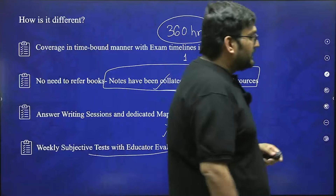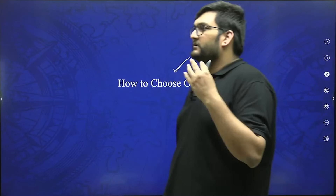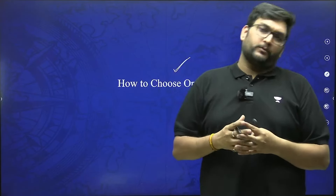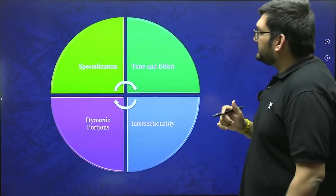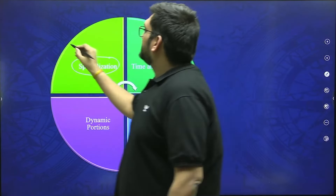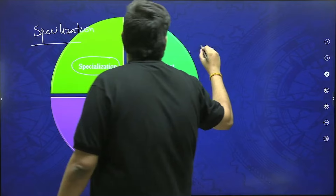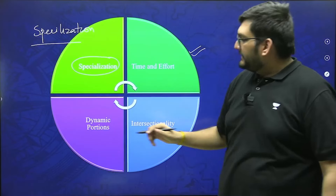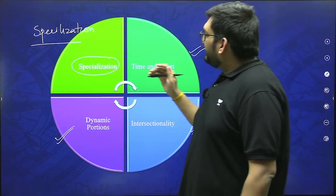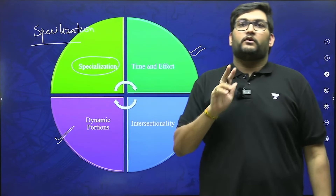Now let us understand how to choose an optional and why you should choose one — a standard question that comes to many students. When we talk about optionals, there are four axis rules. The first axis is specialization. The second is time and effort. The third is dynamic portions. And the fourth is intersectionality.